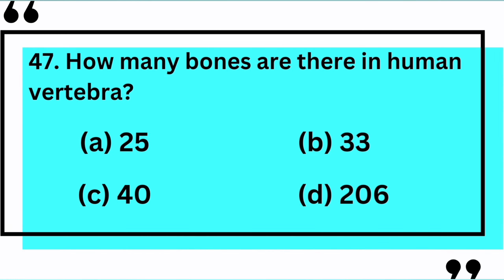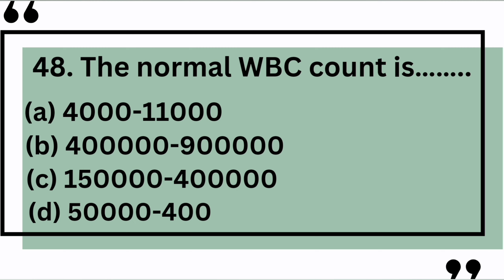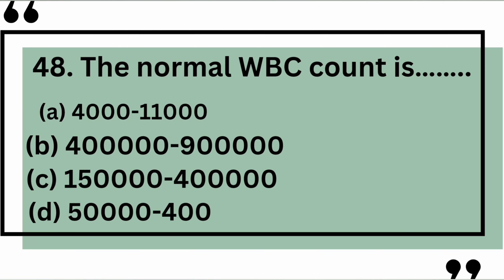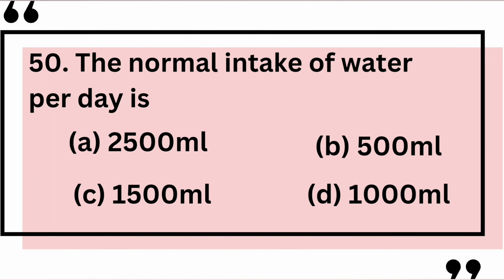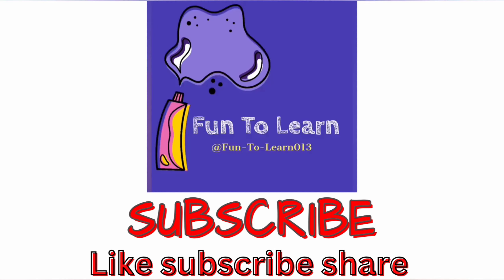How many bones are there in the human vertebral column? Yes, the correct answer is B: 33. The normal WBC count is — yes, the correct answer is A: 4,000 to 11,000. The process of blood cell formation is called — yes, the correct answer is C: erythropoiesis. The normal intake of water per day is — yes, the correct answer is A: 2,500 milliliters.